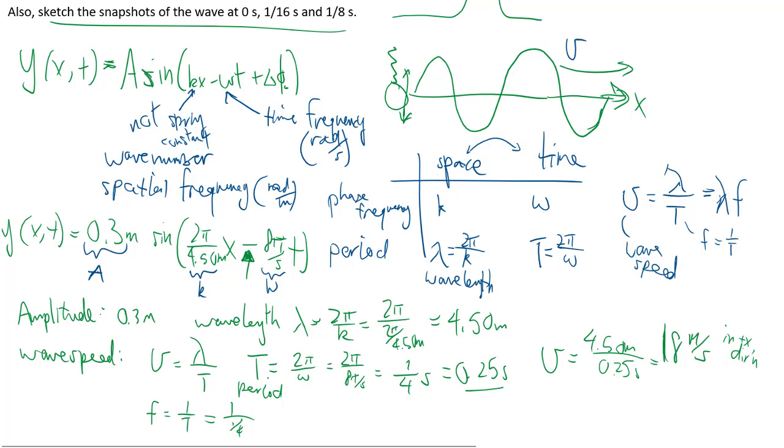And then the frequency is one over the period, so one over one over four seconds is going to be four cycles per second, which we have a special unit called hertz. So it looks like a lot of things is going on, but as long as you keep track of your time and space separately and knowing what all the words refers to, it's really not that bad.